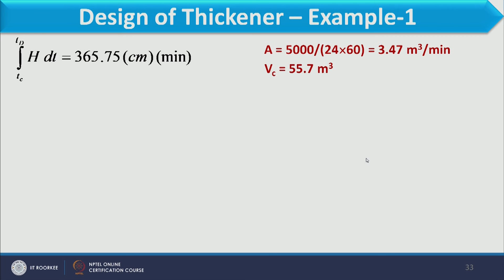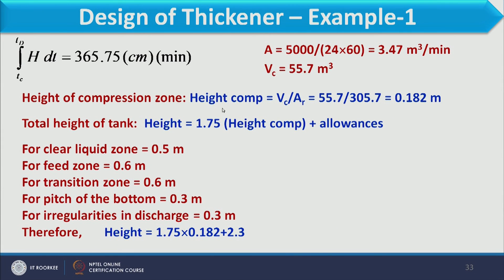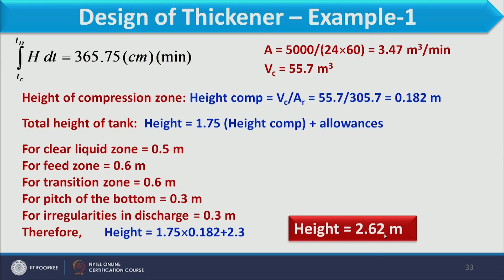The height of the compression zone is HC = VC / AR = 0.182 m. The total tank height is 1.75 times the height of the compression zone plus allowances for different zones. Considering all these factors, the total height of the sedimenter is calculated as 2.62 meters. In this way, we can design the sedimenter to calculate both the diameter and height of the tank.